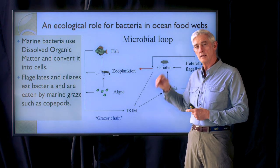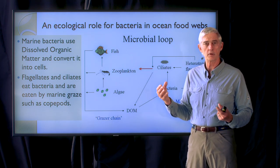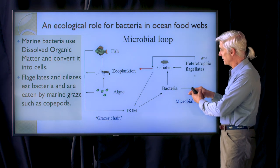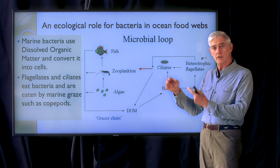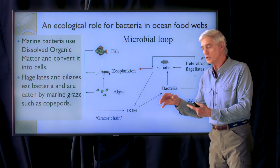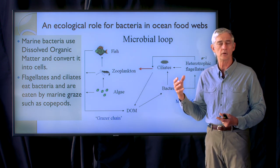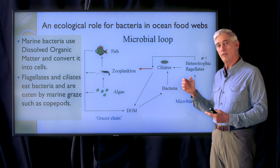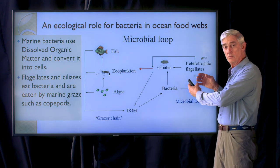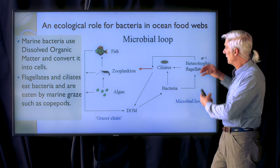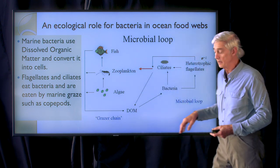These zooplankton eat organisms that are a little bit bigger, and so between the bacteria and the zooplankton in this part of the food chain are a set of single-celled organisms that are bigger than bacteria and can consume them and are big enough for the zooplankton to consume as well.